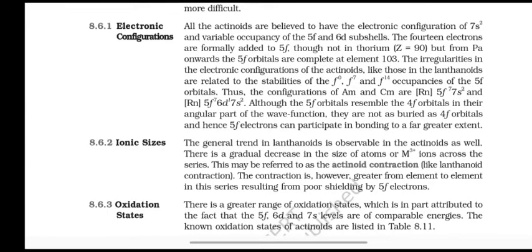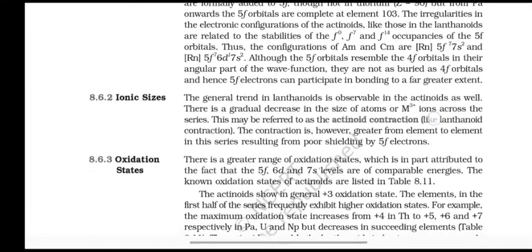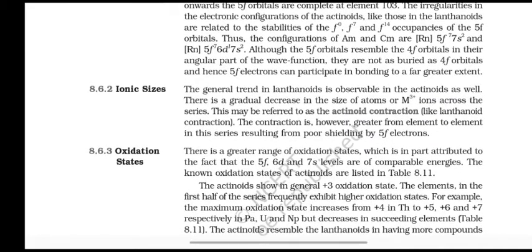But from Pa onwards, the 5f orbitals are complete at element 103. Many irregularities in the electronic configuration of the actinoids, like those in the lanthanoids, are related to stabilities of the f0, f7, and f14 occupancies of the 5f orbitals. Thus, the configurations of Am and Cm are 5f7 7s2, and Bk is 5f7 6d1 7s2.